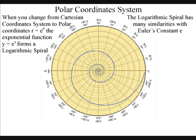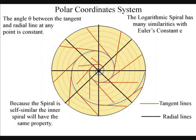This can be seen if we draw a tangent line of the spiral in red. The radial lines that start from the center point of the spiral are in black. What we find is the angle between any pair of these two lines will be the same, and since it is self-similar, the inner spiral will have the same property.